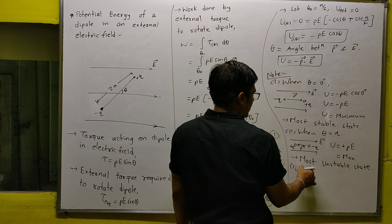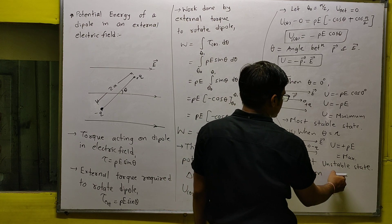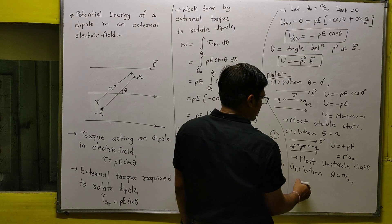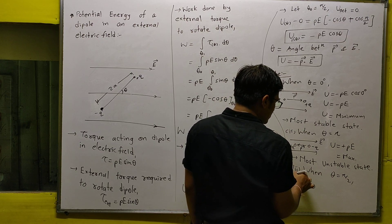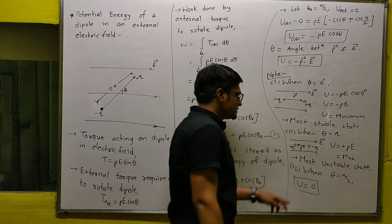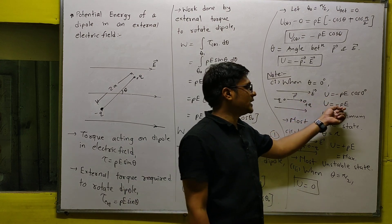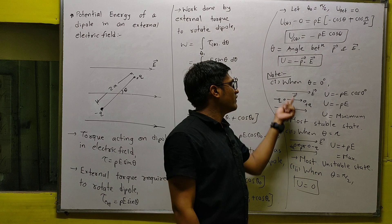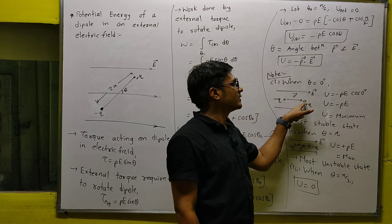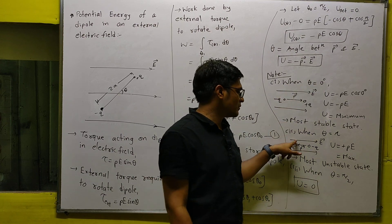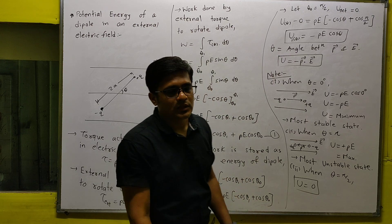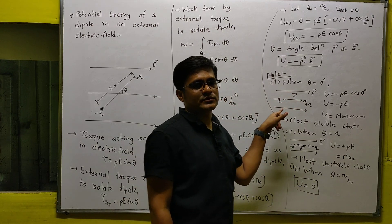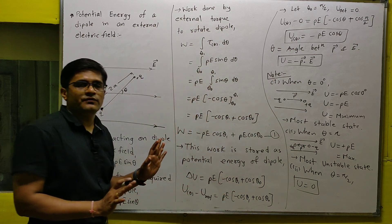Third, when the angle between the electric field and dipole moment is π/2, the potential energy is zero. Note that zero is not the minimum — minus PE is the minimum. So the most stable state is when θ = 0, and the most unstable state is when θ = π. Remember this topic for your short questions and MCQs — this is important theory for your examination.